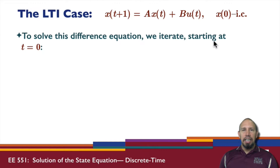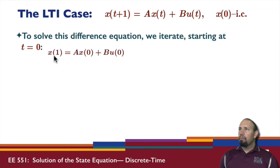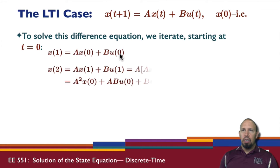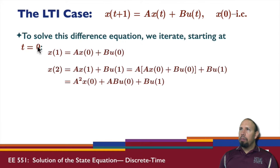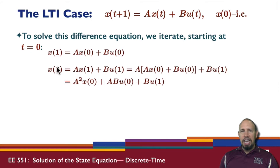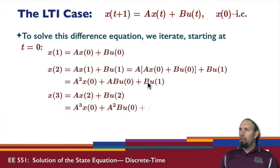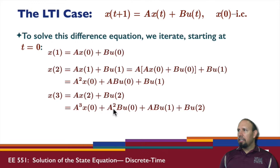To solve this difference equation, we basically iterate. We start at time t-naught and get: x at time 1 equals A times x at time 0, plus B times u at time 0. We then let t equal 1, giving x at time 2. Since x1 was solved in the previous step, we plug that in and simplify to get the expression for the state at time 2.